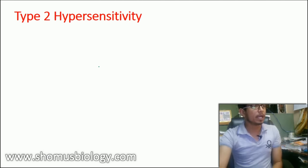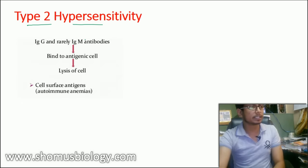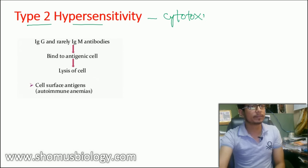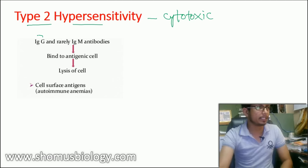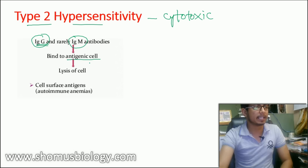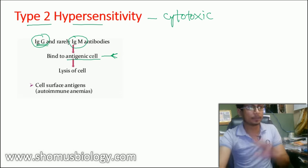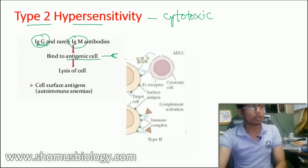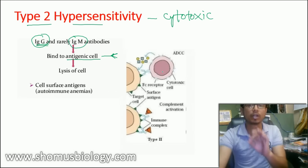Now let's move to Type 2 hypersensitivity — antibody-mediated or cytotoxic hypersensitivity. In this case, two antibody types are involved: immunoglobulin G (IgG, most commonly) and rarely immunoglobulin M (IgM). Both antibodies can bind to an antigenic cell, tagging it with IgG or IgM. Once cells are tagged with IgG or IgM, they are flagged for destruction.